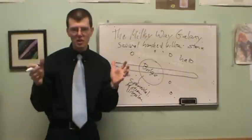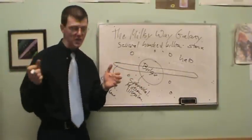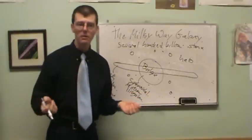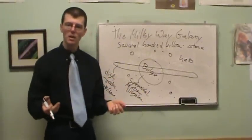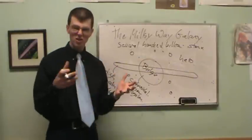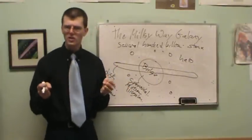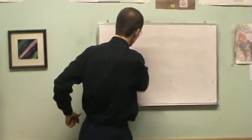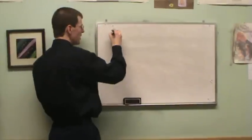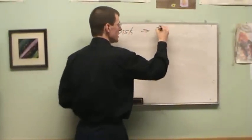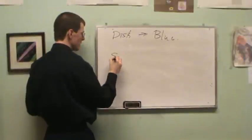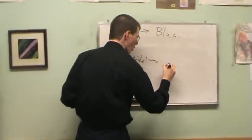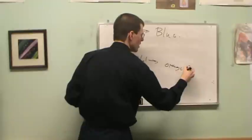When we look at spheroidal stars, they tend to be yellow, orange, and red. Whereas groups of disc stars tend to look blue. That tells us something really interesting. Groups of disc stars look blue, while the spheroidal population tends to look orange, yellow, and red.